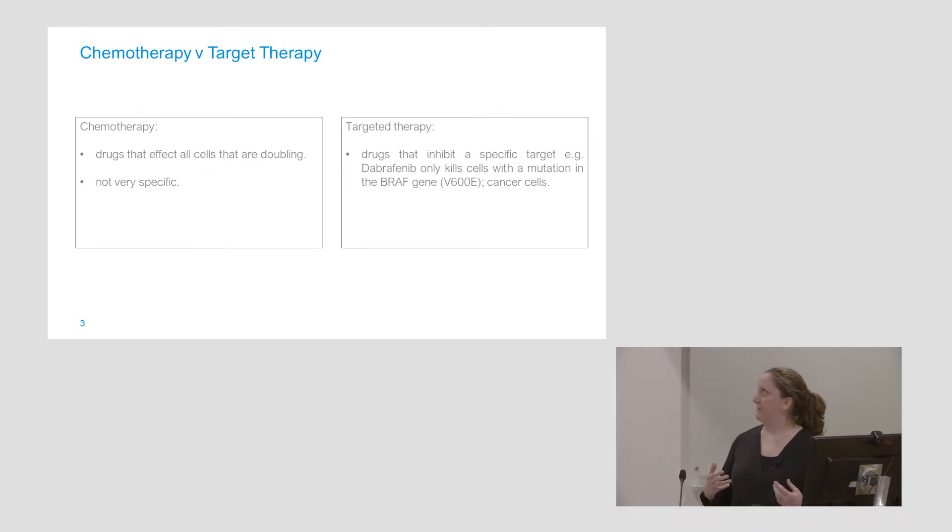We all know the chemotherapies - drugs that generally just affect all cells that are doubling. Cancer cells tend to double quite quickly. They have a high proliferation rate. Chemotherapy should target those, but it also targets every normal cell in your body that happens to proliferate quite fast. This is why patients on chemotherapy will lose their hair. And this chemotherapy is just not very specific. It's going to target everything in your body, whereas targeted therapies, if we can find a vulnerability in the cancer cell that's not present in the normal cell, and then we can develop a drug to target this, it's only going to target the cancer cells and your normal cells should generally be okay.